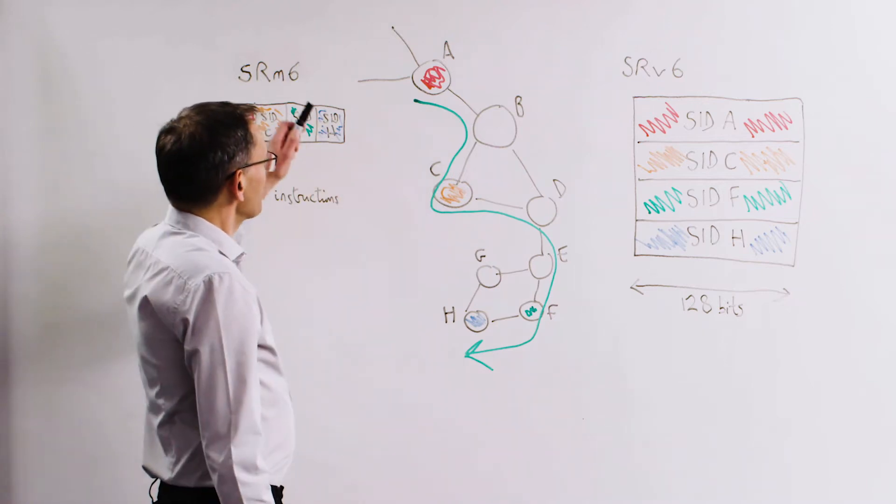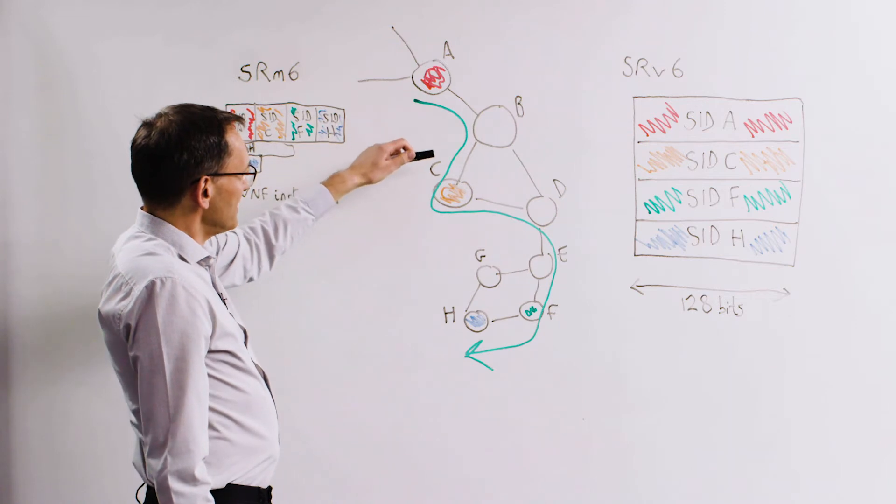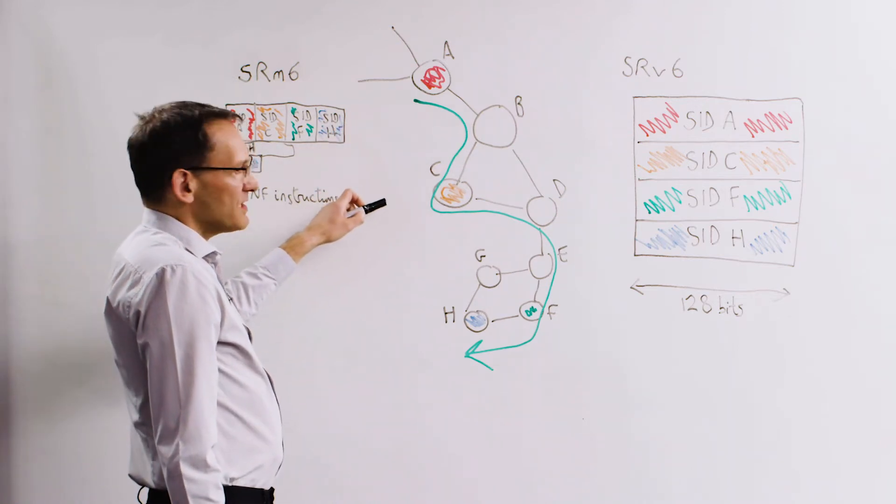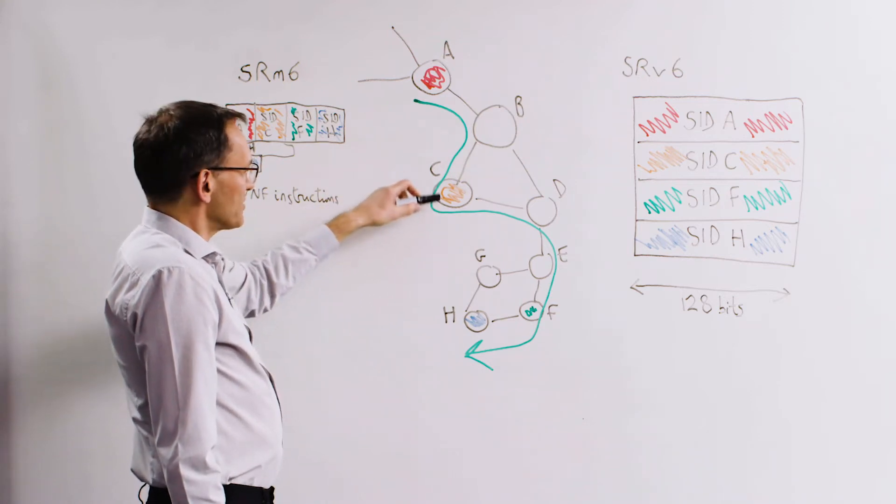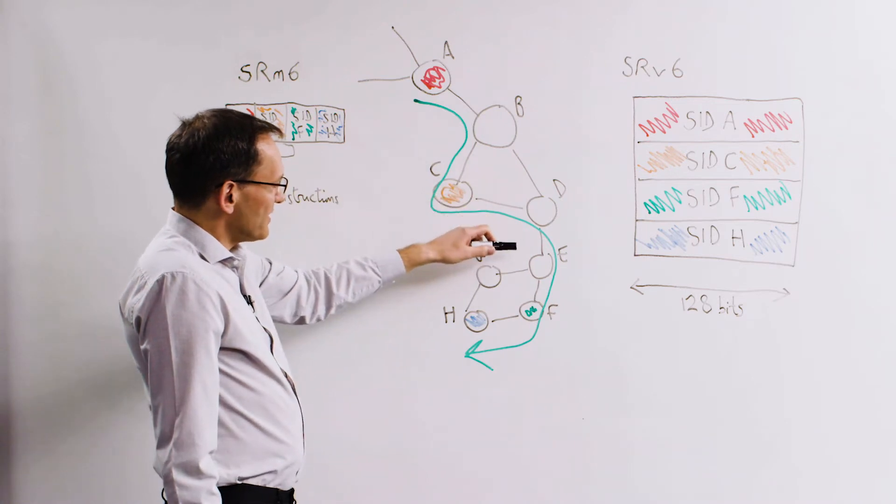In this diagram we have traffic coming in from the left into node A and then passing into node B. When traffic gets to node B we want it to pass into node C. Node C has a service function associated with it. Then the traffic goes into D and arrives at E.